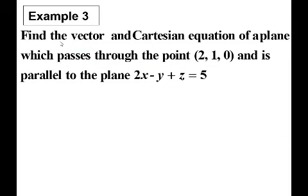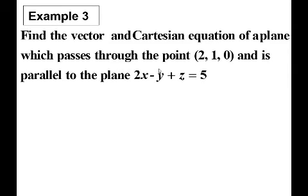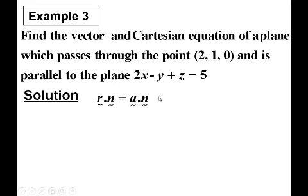Example 3: Find the vector and Cartesian equation of a plane which passes through the point (2, 1, 0) and is parallel to the plane 2x minus y plus z equal to 5. Remember to find the equation of the plane, the vector equation is R dot N equal to A dot N, where A is a point on the plane.